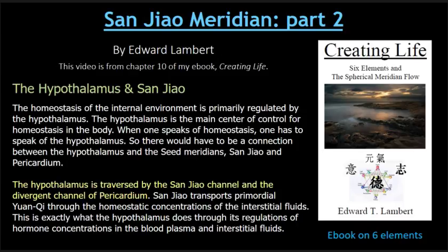The homeostasis of the internal environment is primarily regulated by the hypothalamus. The hypothalamus is the main center of control for homeostasis in the body. When one speaks of homeostasis, one has to speak of the hypothalamus. So there would have to be a connection between the hypothalamus and the seed meridians, Sanjiao and pericardium. The hypothalamus is traversed by the Sanjiao channel and the divergent channel of pericardium, so there is a direct connection from the hypothalamus to the seed meridians.